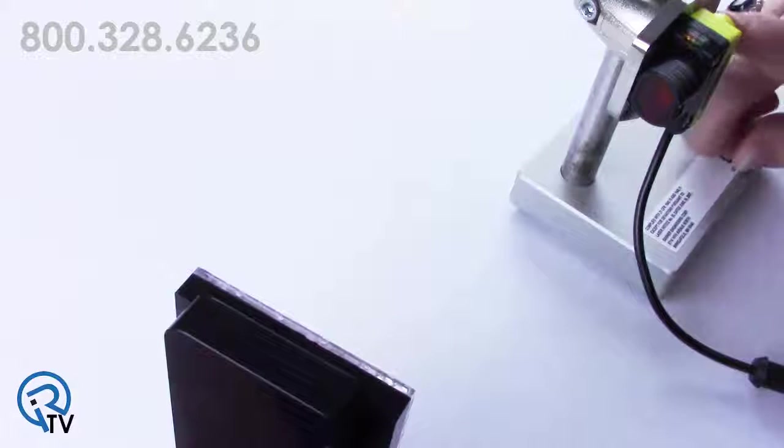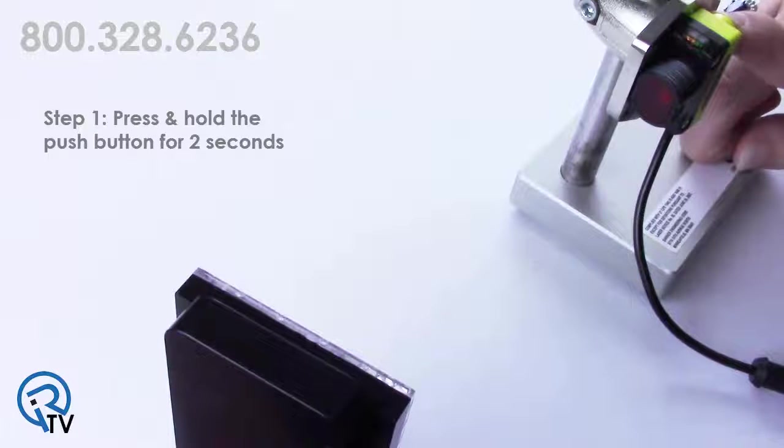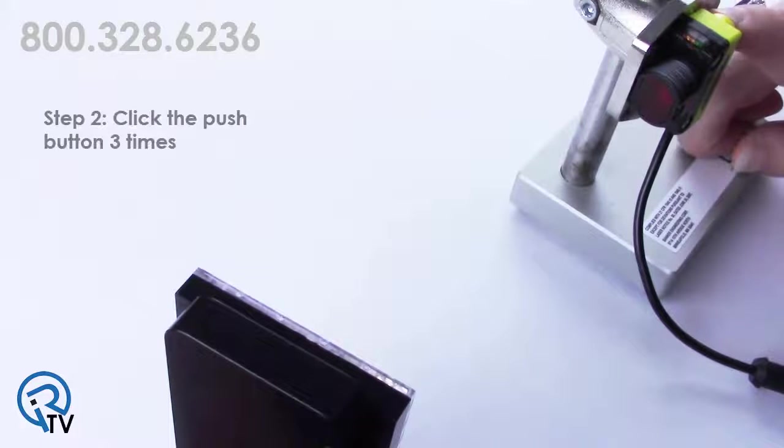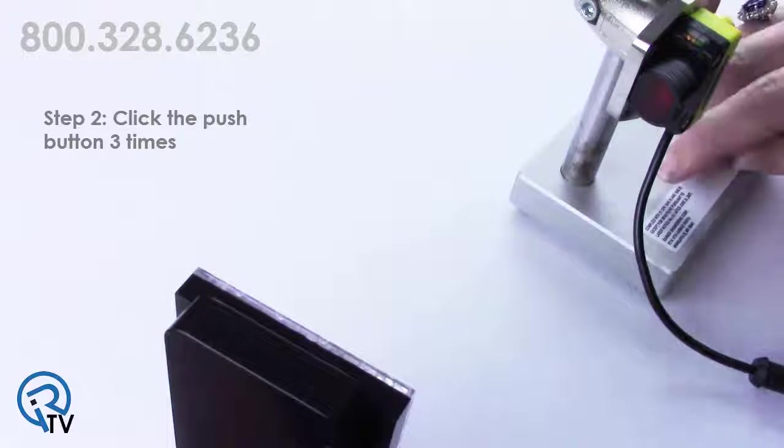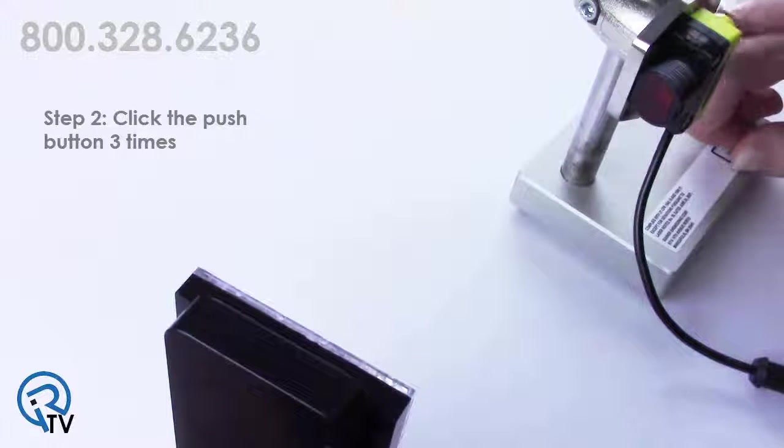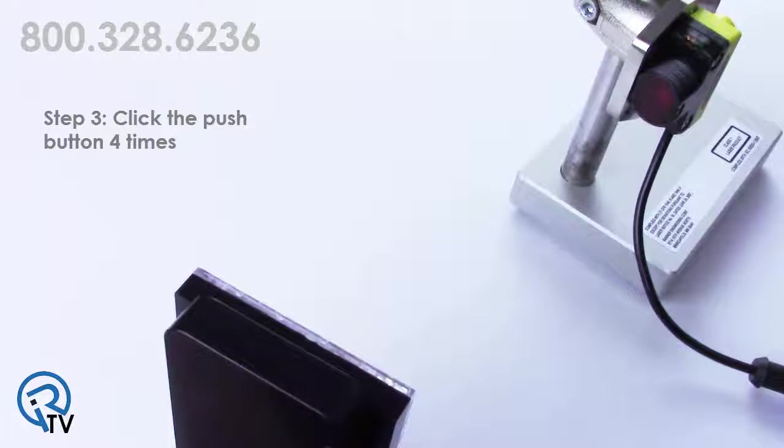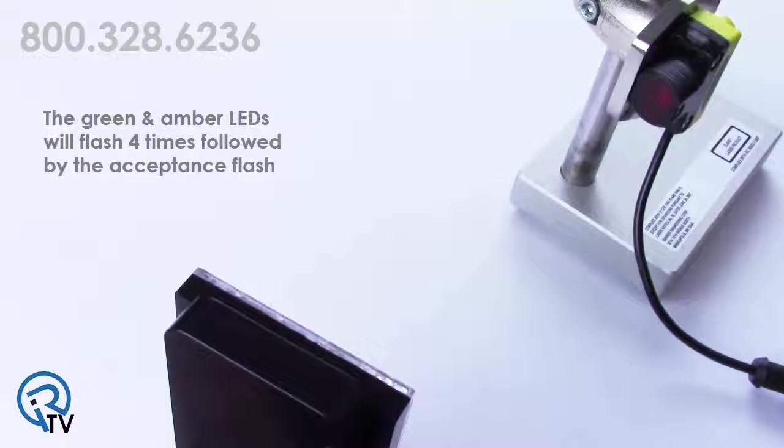If you choose to disable this feature once it has been enabled, follow steps one and two. And at step three, click the push button four times to disable the auto compensation setting. The green and amber LEDs will flash four times followed by the acceptance flash.